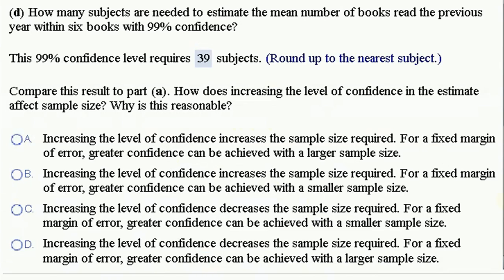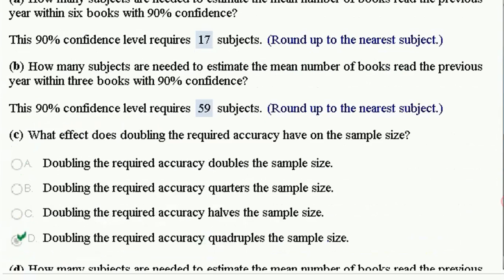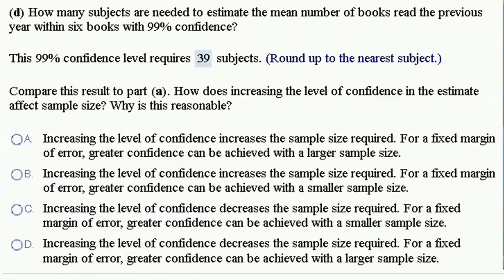So when we increased our confidence level from 90 to 99%, we went from a sample size of 17 to a sample size required of 39. Increasing the level of confidence increases the sample size required. If you want a fixed margin of error, greater confidence can be achieved with a larger sample size. This is a textbook answer.